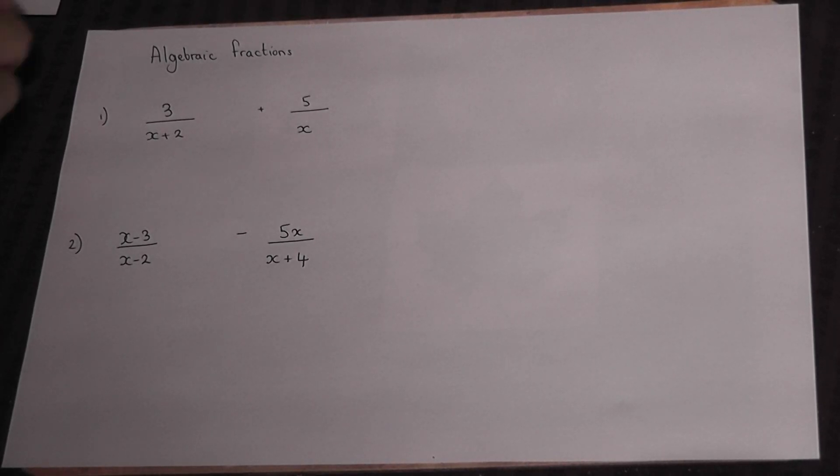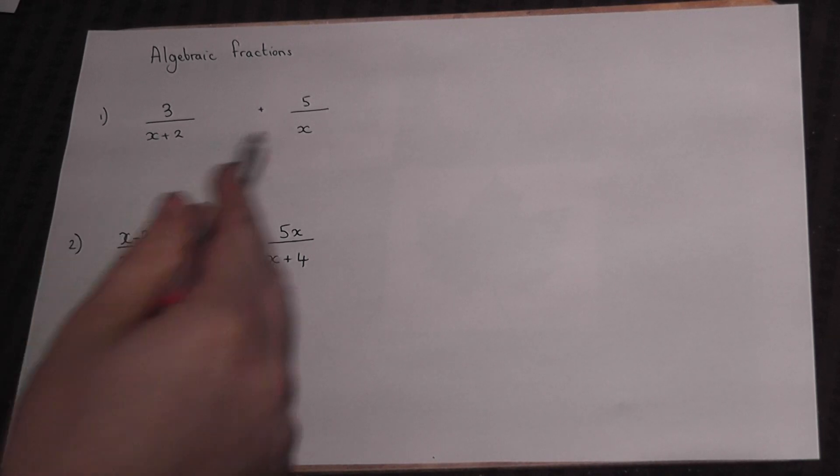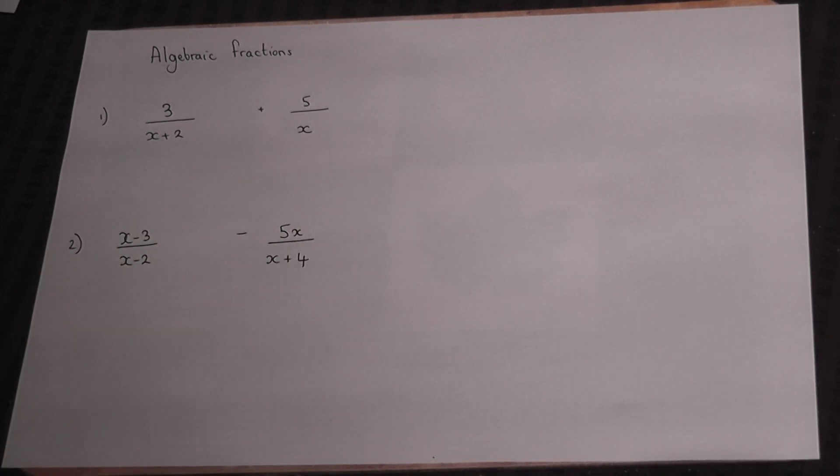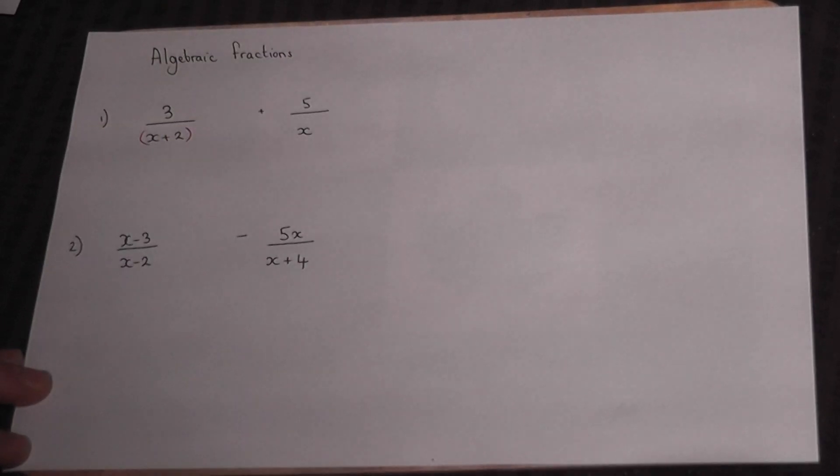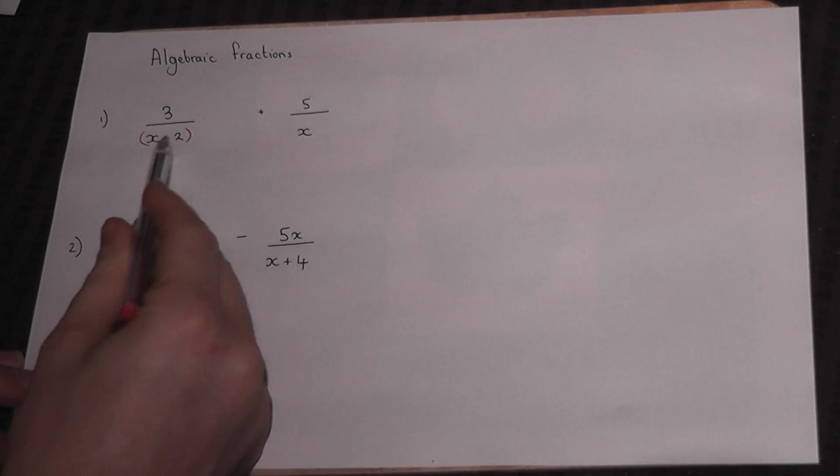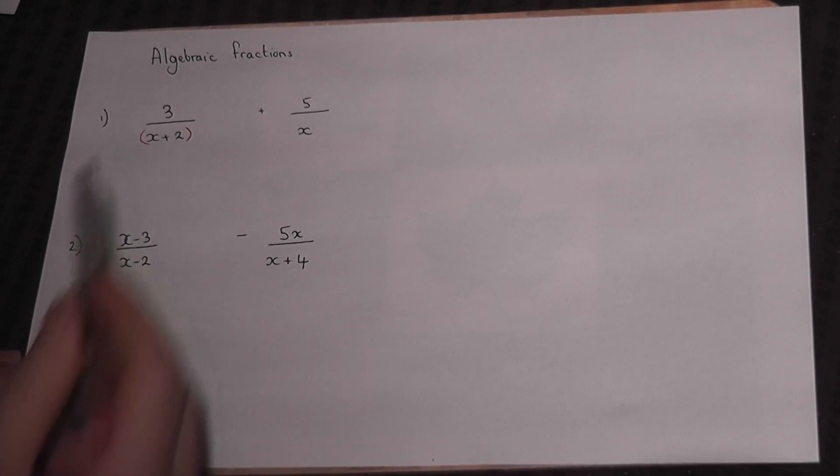This video looks at two examples of algebraic fractions, the first being addition, the second being subtraction. It summarizes a few golden rules which will always work. The first golden rule is: where necessary, place things in brackets. This is where there's more than one thing either above or below the fraction.